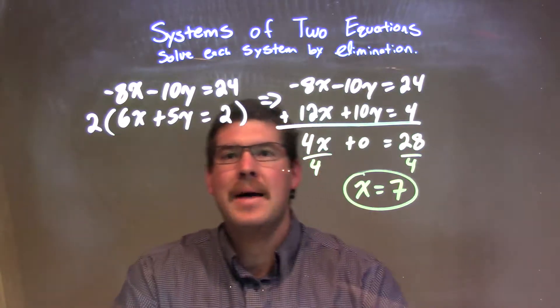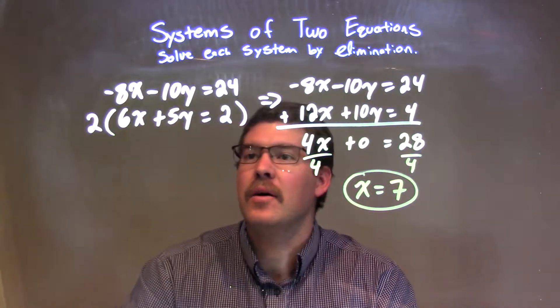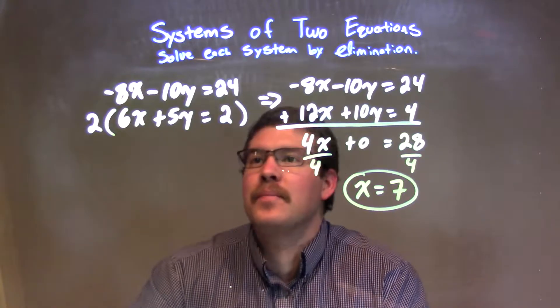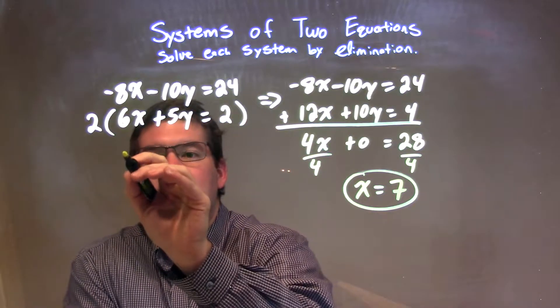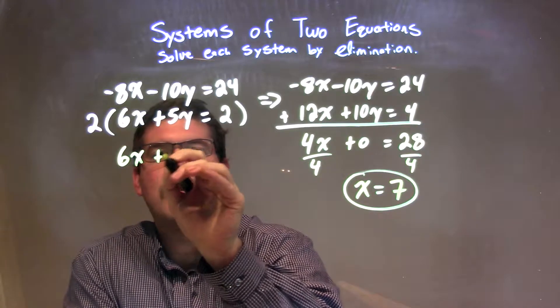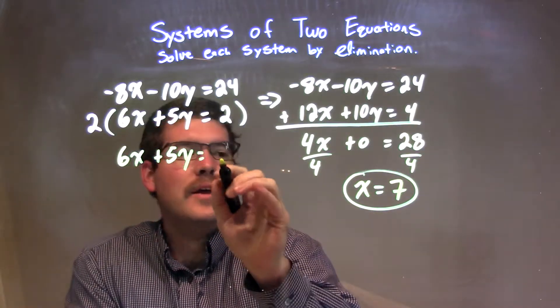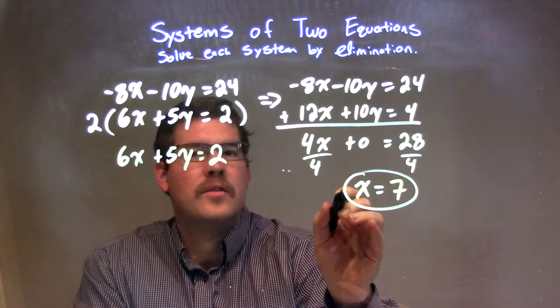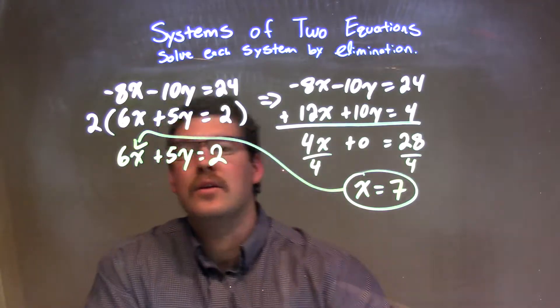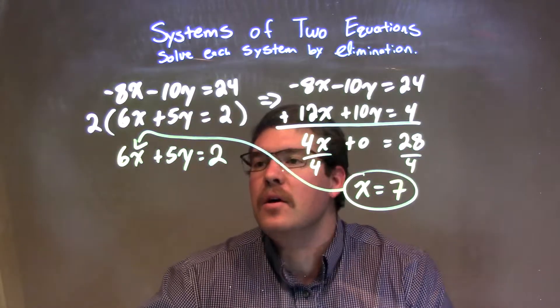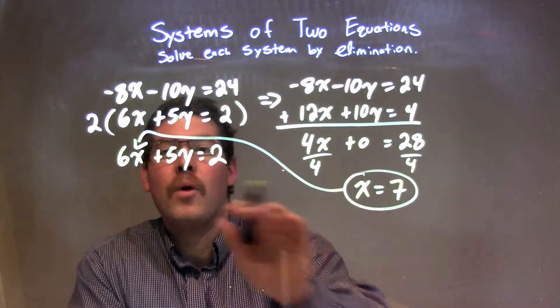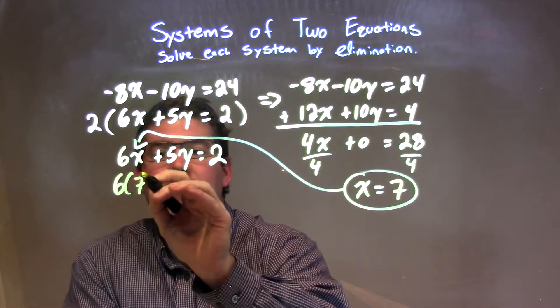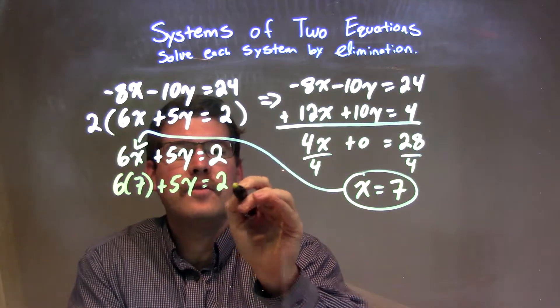From there, I'm going to plug that back into one of my equations. I find the second equation easier, so I'm going to rewrite that second equation here: 6x plus 5y equals 2. And I'll plug that 7 in for x. So 7 goes in for x right there, and what I want to do is 6 times 7, substitute that in.